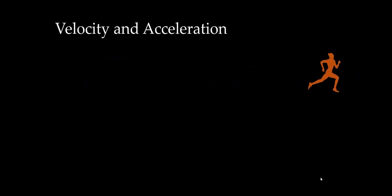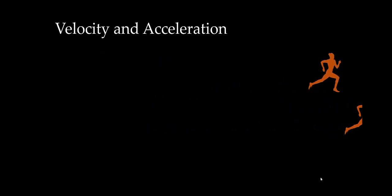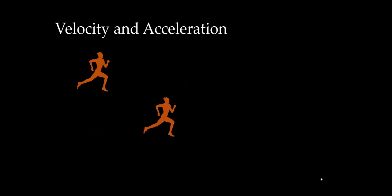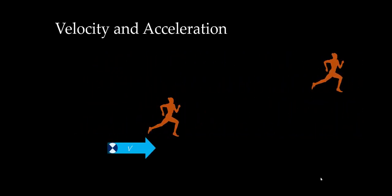Velocity is how fast you are going in a particular direction, or how quickly your position is changing. Let's take a look at this runner. She has a certain velocity. Now let's look at her at another instant in time. Notice that she is going faster—her velocity increased. In order to increase velocity, we need it to have an acceleration over a period of time.